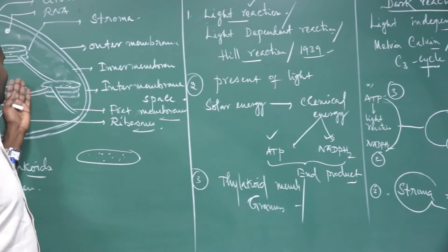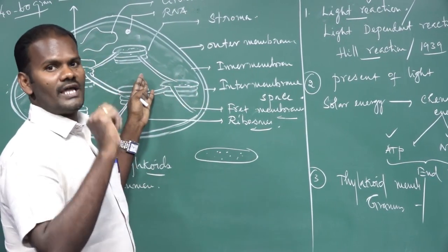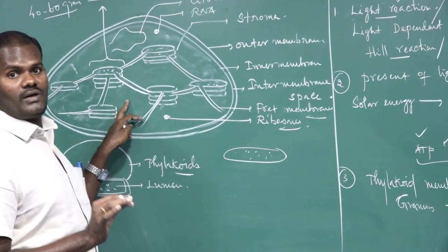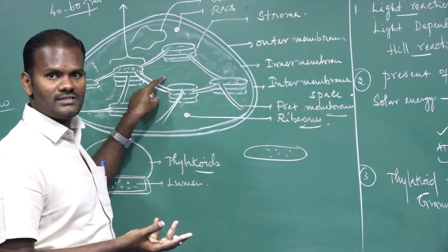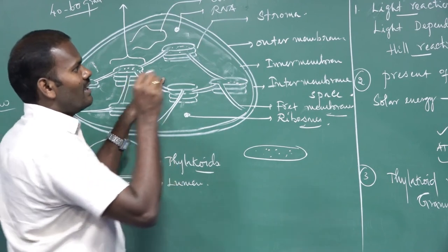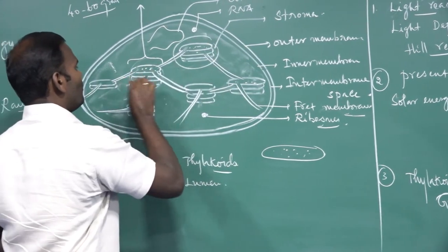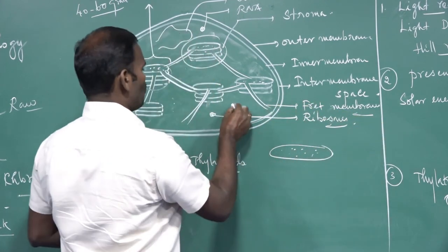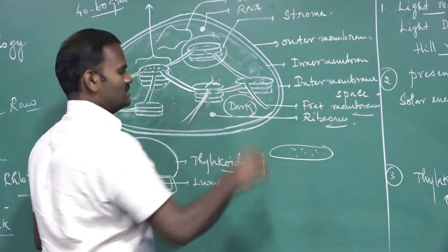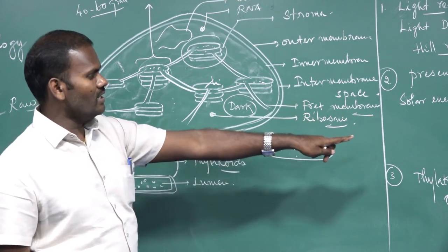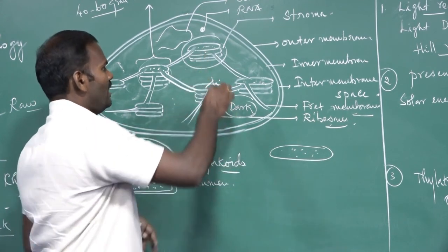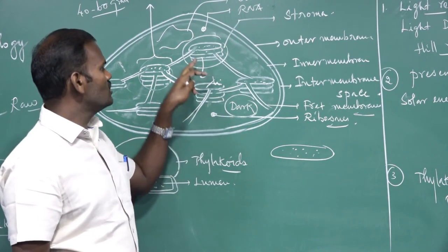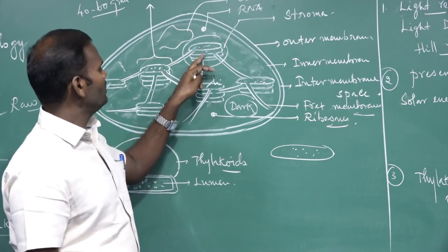Both reactions take place within the chloroplast but at different sites. Light reaction takes place in the granum or thylakoid, because the photosynthetic pigments are located there. Dark reaction takes place in the stroma. The ATP and NADPH2 synthesized by light reaction in the thylakoid membrane diffuse out into the stroma, where they are utilized by the dark reaction.